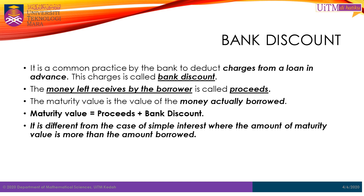In simple interest, the amount of maturity value is more than the amount borrowed. Normally, in the beginning you have an amount that will eventually be more after a certain time period, such that the present value is lower than the future value. However, in bank discount it is the other way around.